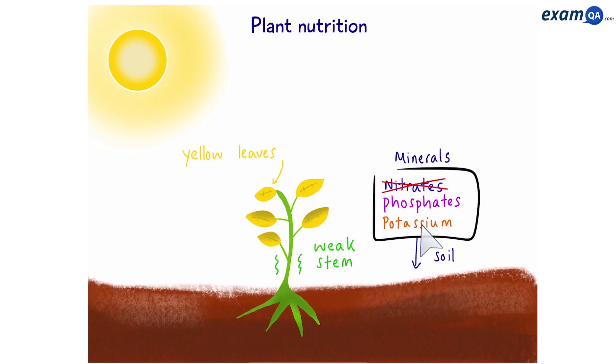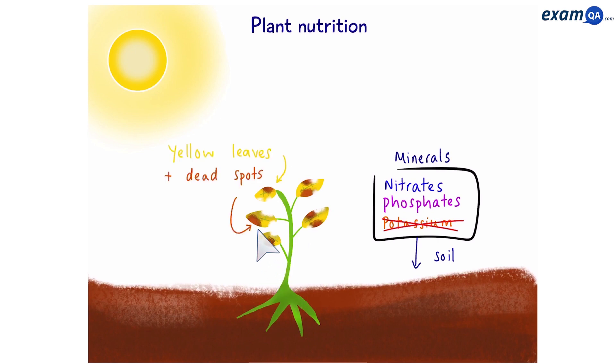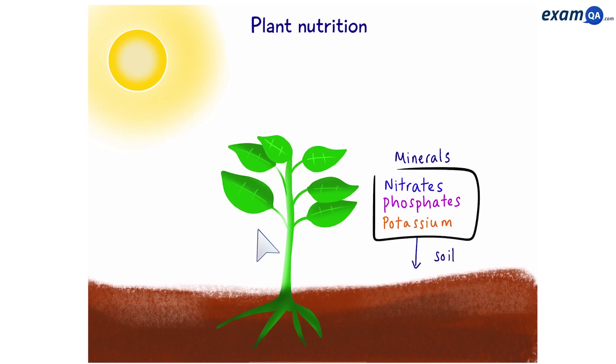Without nitrates, the plant will have yellow leaves and a weak stem. No phosphates means purple leaves and bad roots. And getting rid of potassium gives us yellow leaves with dead spots. So it's important that all three minerals are in the soil to have a very healthy plant.